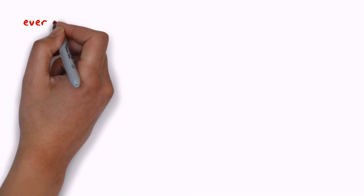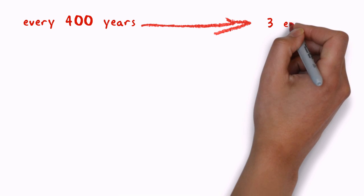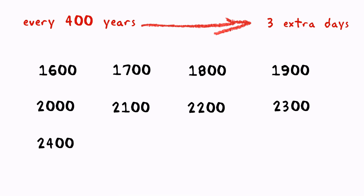Over the course of 400 years, this would add up to three extra days. In order to solve this problem, it was decided to leave out the leap year three times every 400 years. So the new rule was, a century year would only be a leap year if it was evenly divisible by 400.